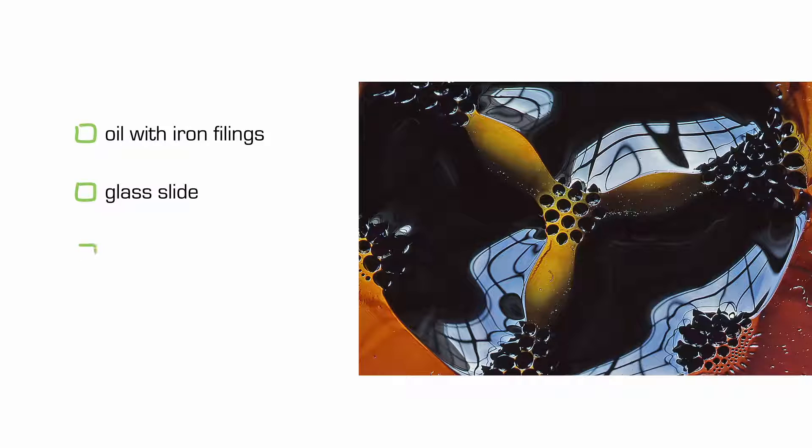Under the glass slide is a yellow post-it, and under the yellow post-it are seven circular magnets. And you're seeing the small iron particles respond to the magnets.